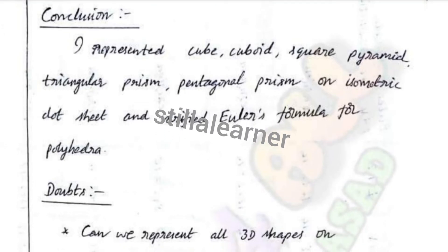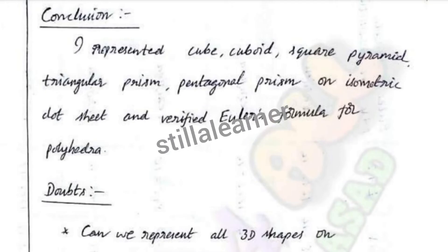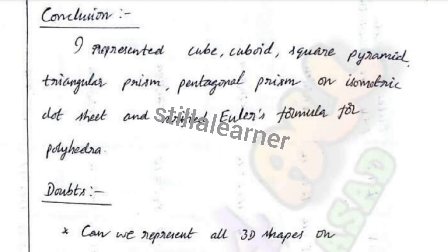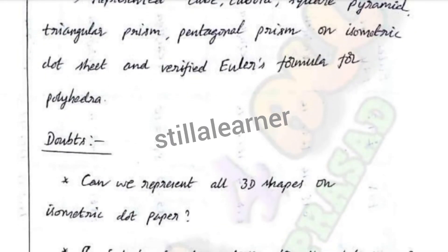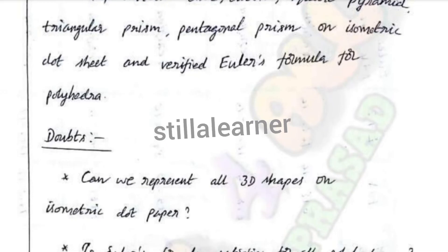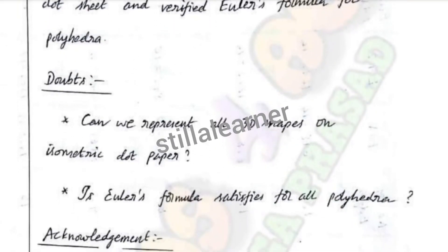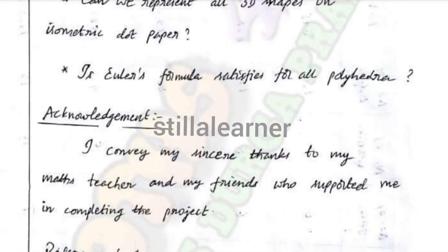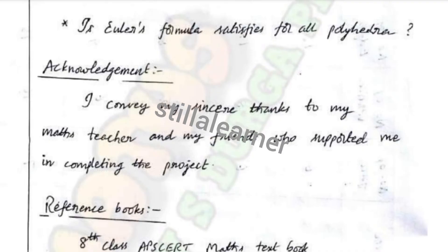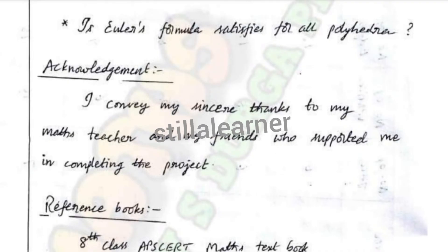Conclusion: I represented cube, cuboid, square pyramid, triangular prism, and pentagonal prism on isometric dot sheet and verified Euler's formula for polyhedra. Doubts raised: Can we represent all 3D shapes on isometric dot paper? Does Euler's formula satisfy for all polyhedra?